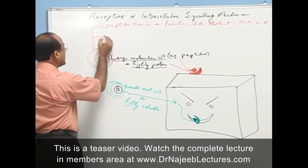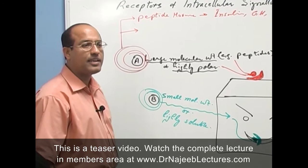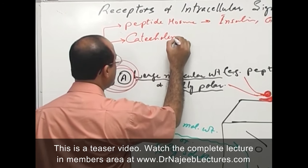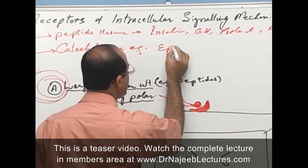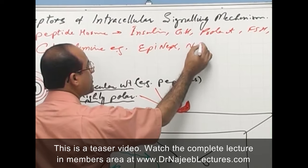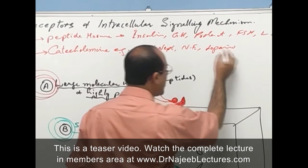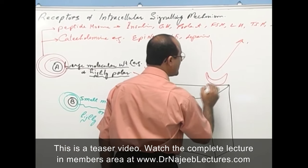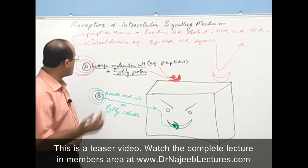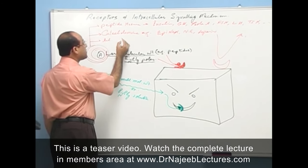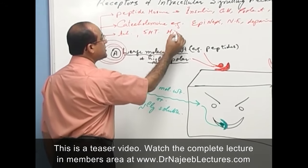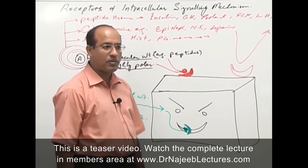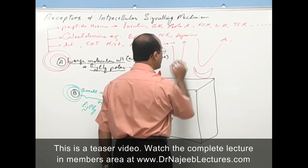Another group of compounds with surface receptors are highly charged molecules — catecholamines like epinephrine, norepinephrine, and dopamine are highly polar and cannot enter the cell, so their receptors are on the cell surface. Similarly, acetylcholine, 5-hydroxytryptamine (serotonin), histamine, and prostaglandins are also not soluble enough to enter the cell, so their receptors are on the surface.